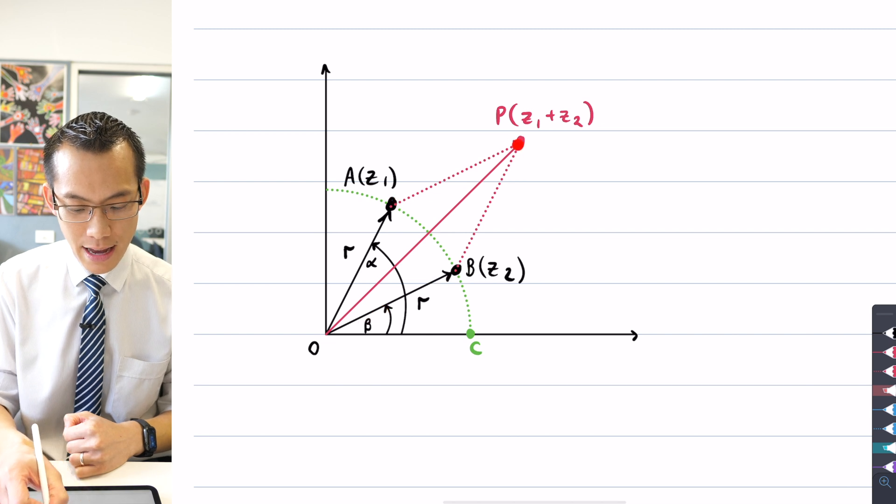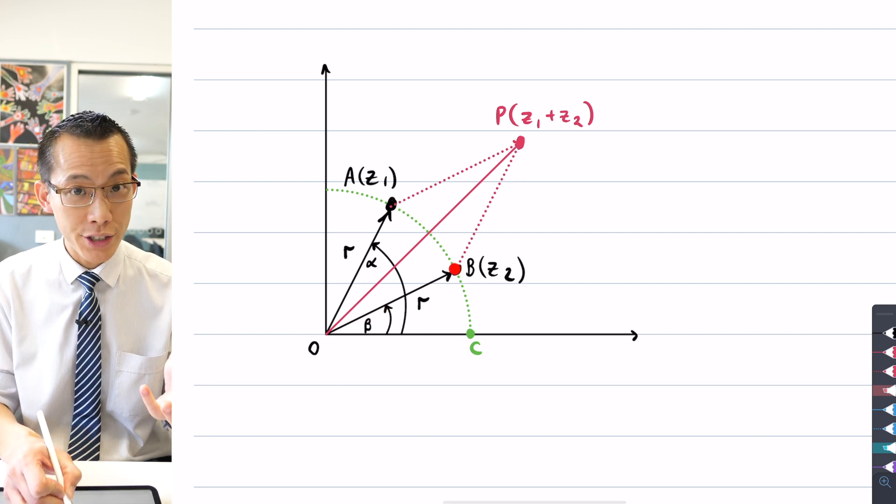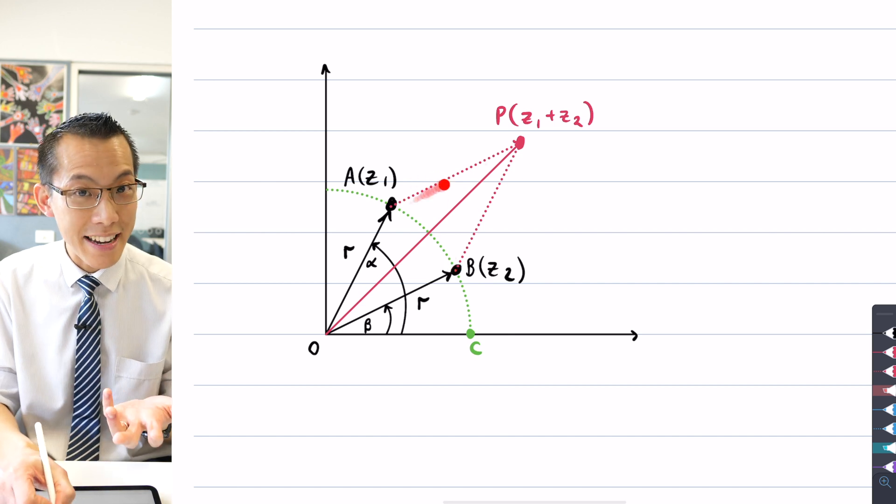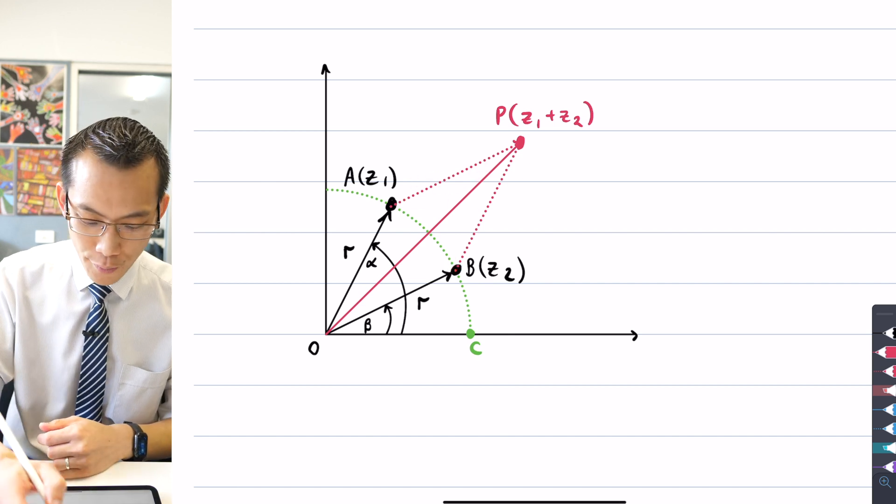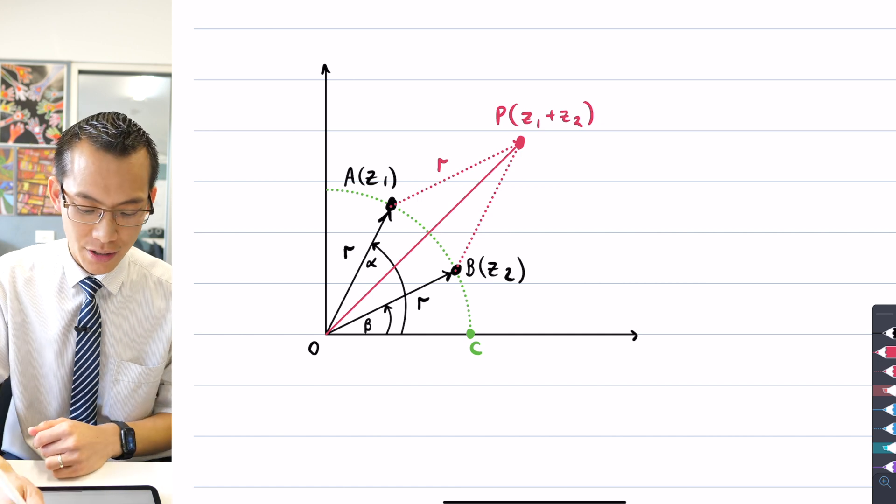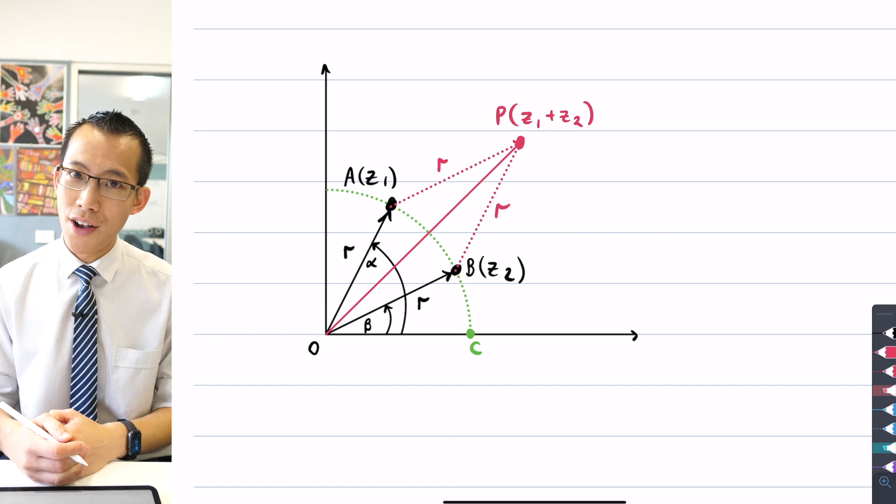so AP as a vector is the same as OB in terms of its direction and its magnitude, that is also its length. So therefore I can say, well, that's R and by extension, same kind of logic, that's R over there.